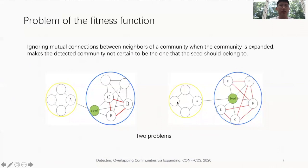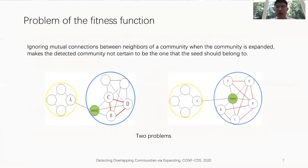However, we consider that this approach ignores mutual connections between neighbors of the community when it is expanded, making the detected community not certain to be the one the seed should belong to. For example, in figure 2, the red edges are not taken into consideration when the current seed is expanded. In other words, when the fitness of vertex V with respect to community C is calculated, the connection between V and vertices that should belong to C but are currently outside C will not be considered. Thus, two problems may be caused.